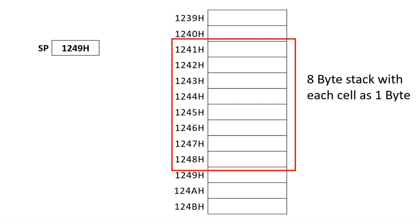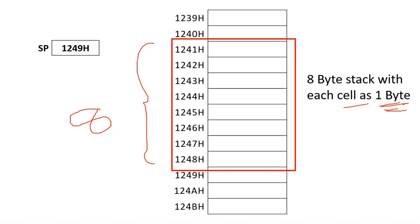We declare a part of the memory as stack. For example, I have declared 8 bytes of continuous memory — from 1241H to 1248H — as the stack. These 8 bytes are the stack. The size of the stack is 8 bytes, and each cell is 1 byte, so we can store 8 different items. You can describe it as either an 8-byte stack or 8 items of 1 byte each.